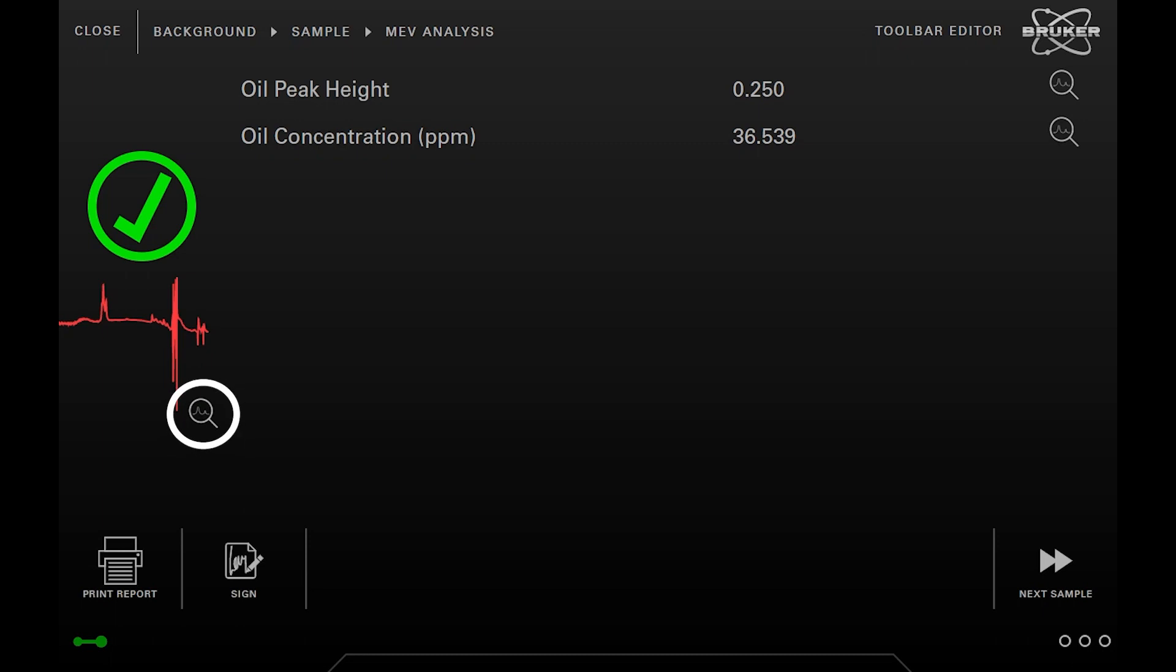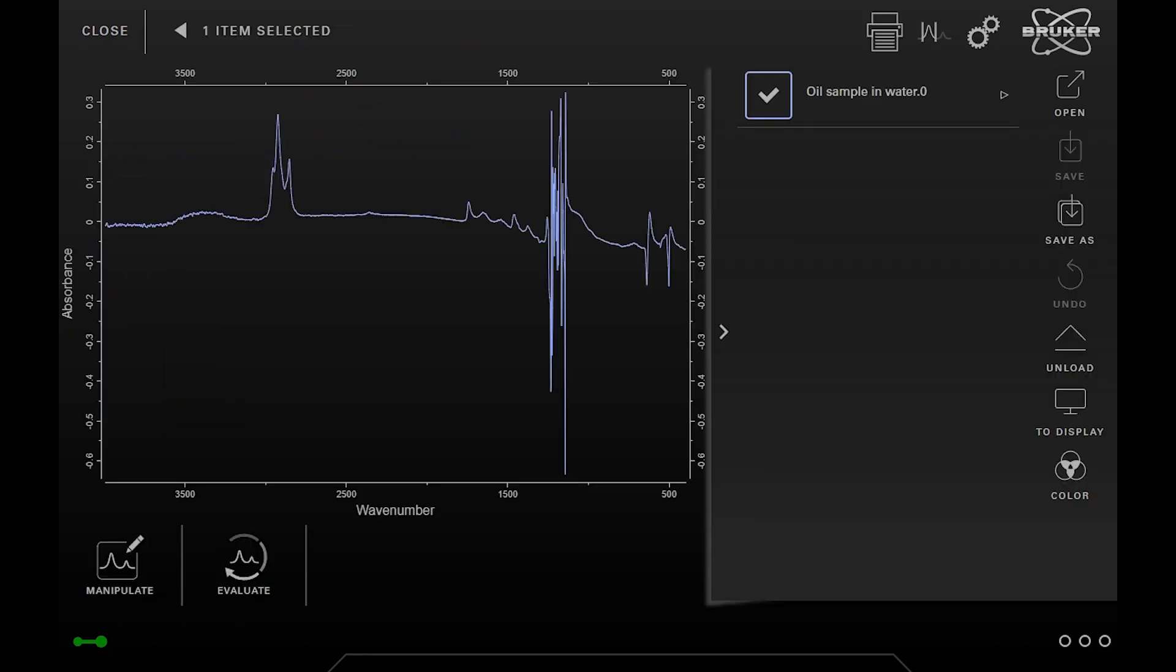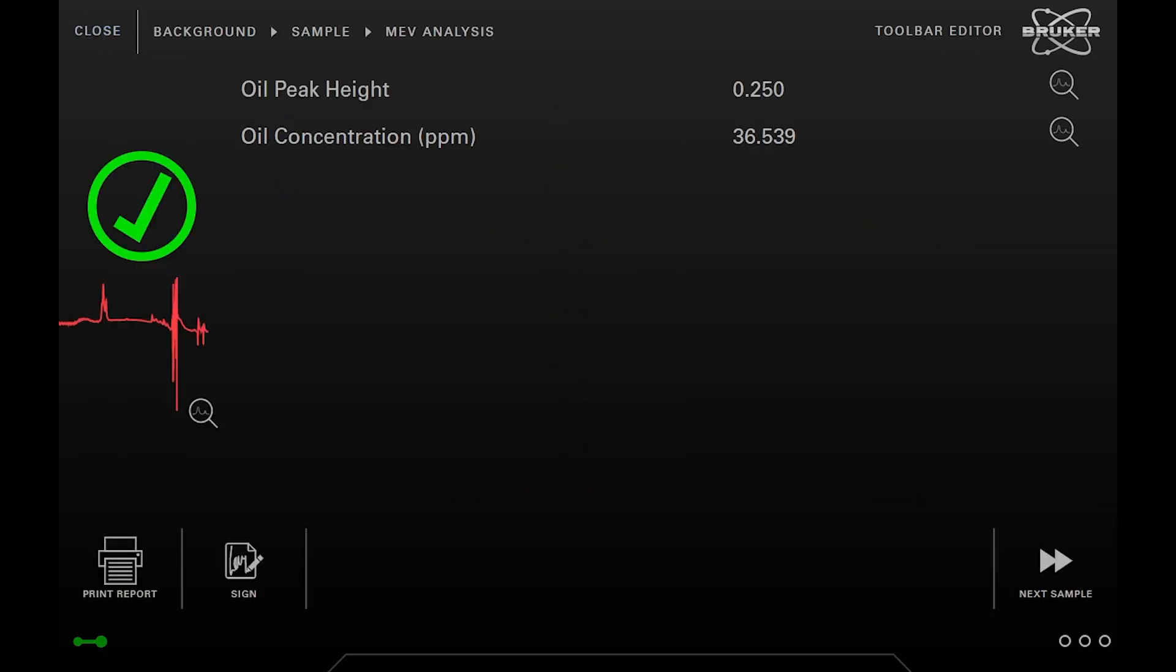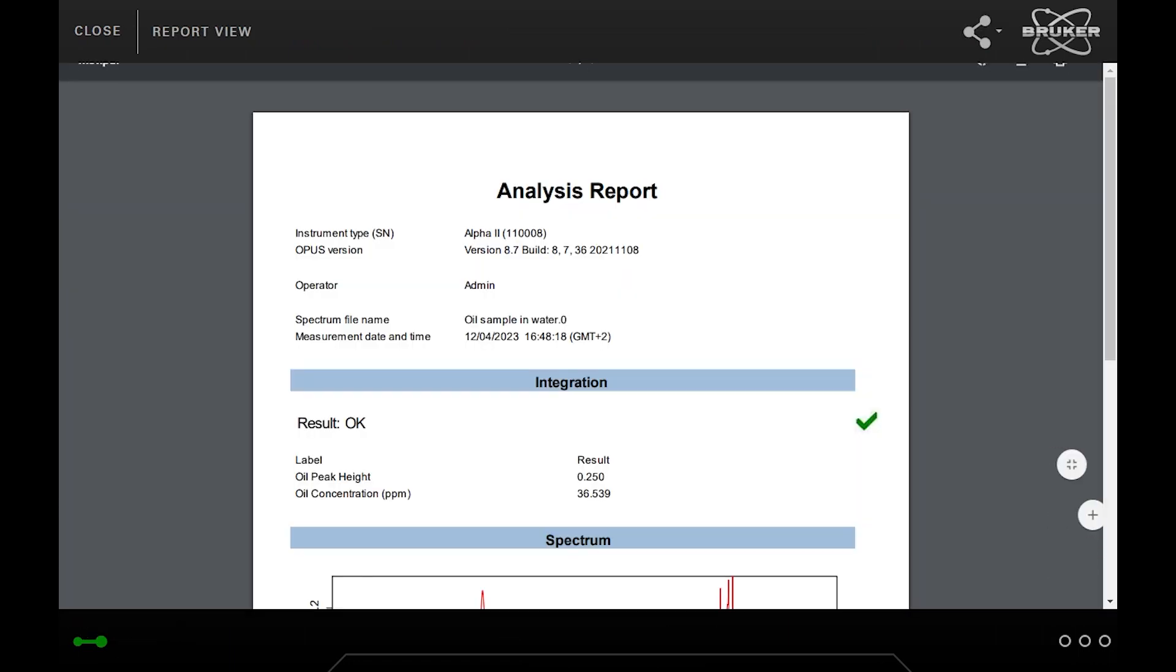By clicking on the magnifier symbol, the IR spectrum opens in an enlarged view to check the details of analysis. By closing the spectrum window, you get back to the result page where you can create a report. Depending on your preference, you can either download the report as a PDF or print it out.